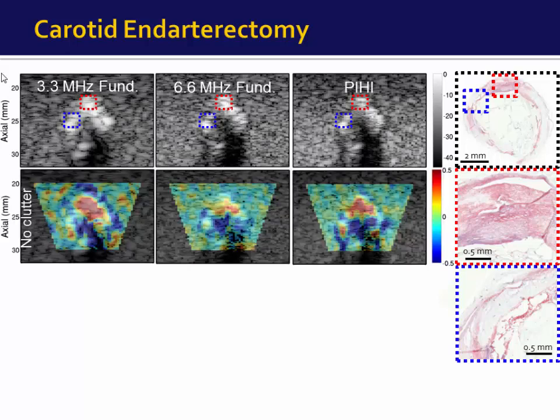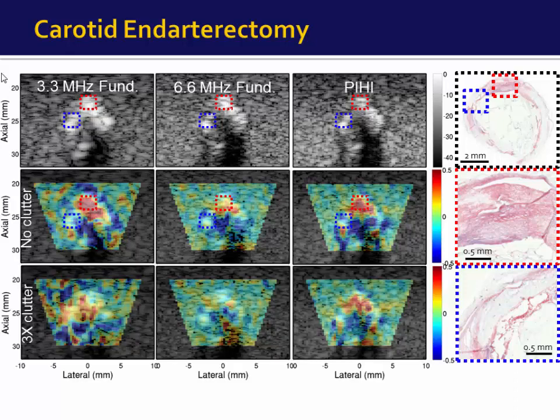Looking at the corresponding TSI images, there is rough qualitative agreement between TSI and histology. In the red dashed region there is positive strain corresponding to the lipid-rich region, and in the blue dashed region there is negative strain corresponding to the water-based region. With the introduction of clutter, however, significant degradation occurs: the 3.3 MHz image shows false positive strain in the blue dashed region, and the 6.6 MHz image shows near-zero or negative strain in the red dashed region. The pulse inversion tracking matches well with both the no-clutter case and the original histology.